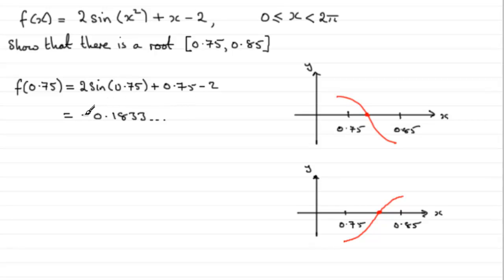So, we've got a negative value, I should say. So, it's looking like it's going to be this graph. But I can't guarantee that. I've got to make sure that when I put 0.85 in, I get a positive value out.